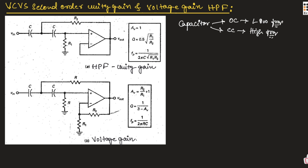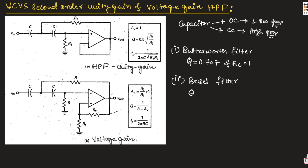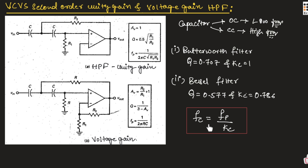For both unity gain and voltage gain circuits, we can design a Butterworth filter by taking quality factor Q as 0.707 and KC equal to 1. We can design a Bessel filter by taking Q equal to 0.5777 and KC equal to 0.786. For both filters, the cutoff frequency FC is equal to FP divided by KC.